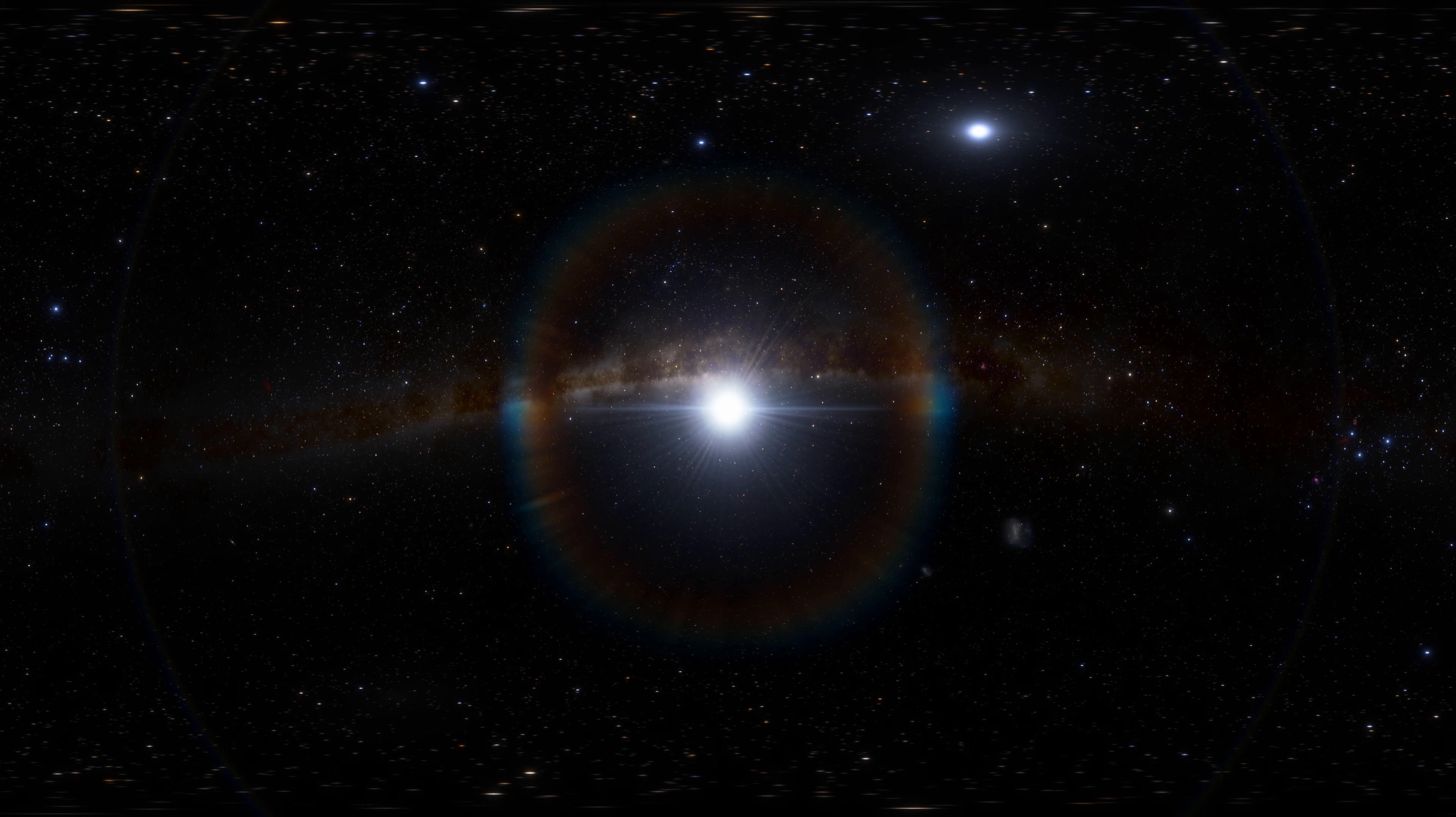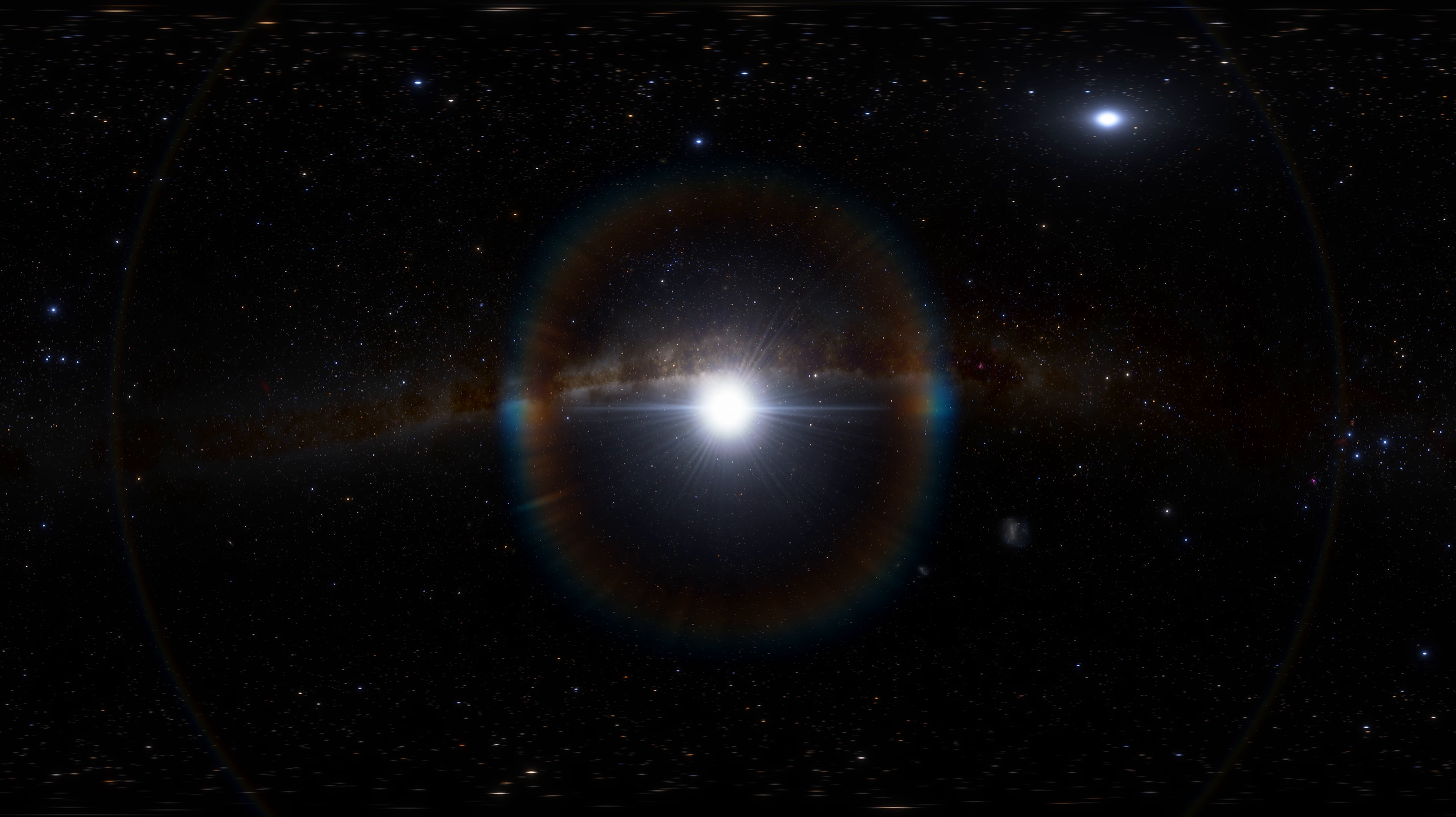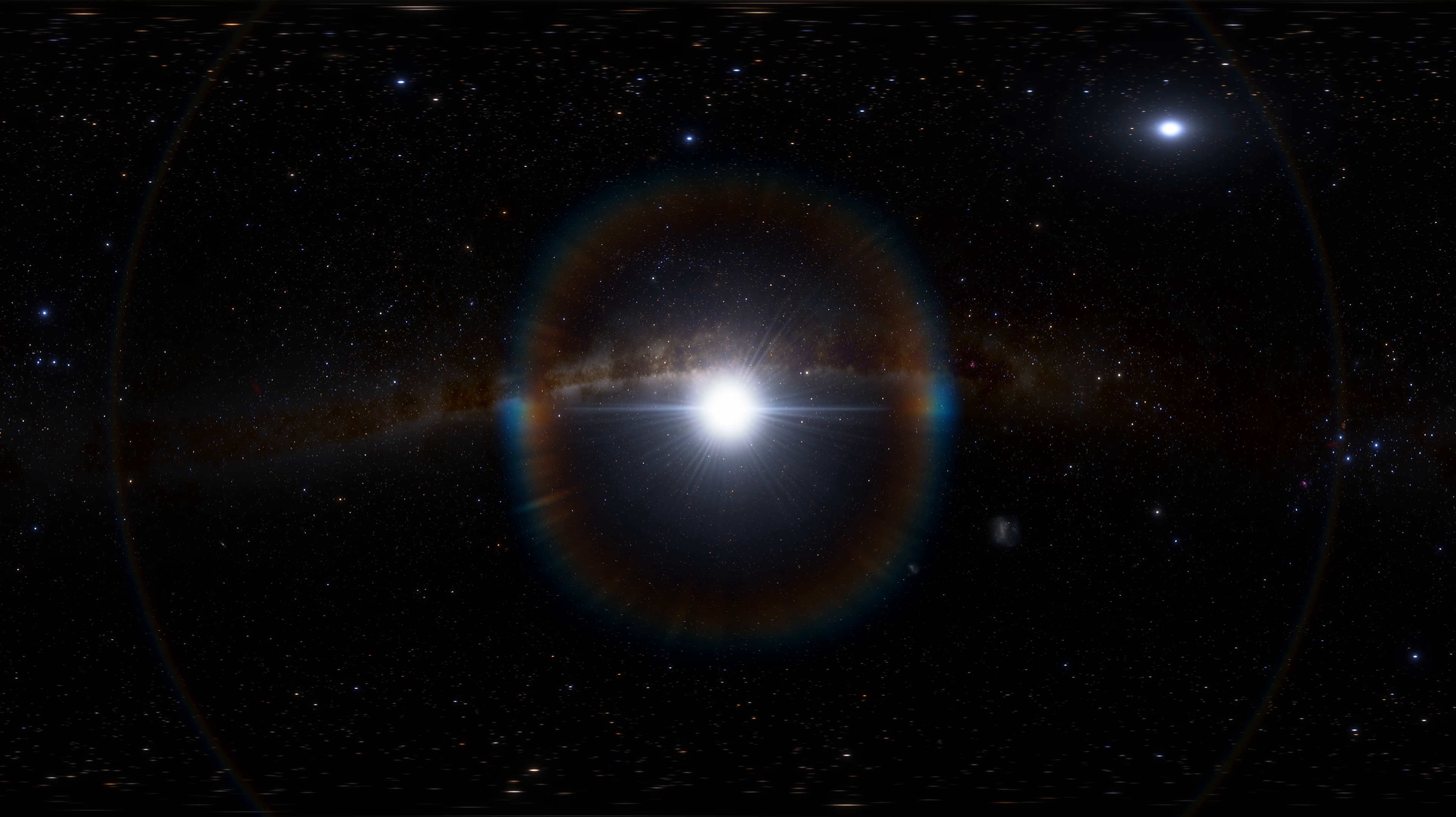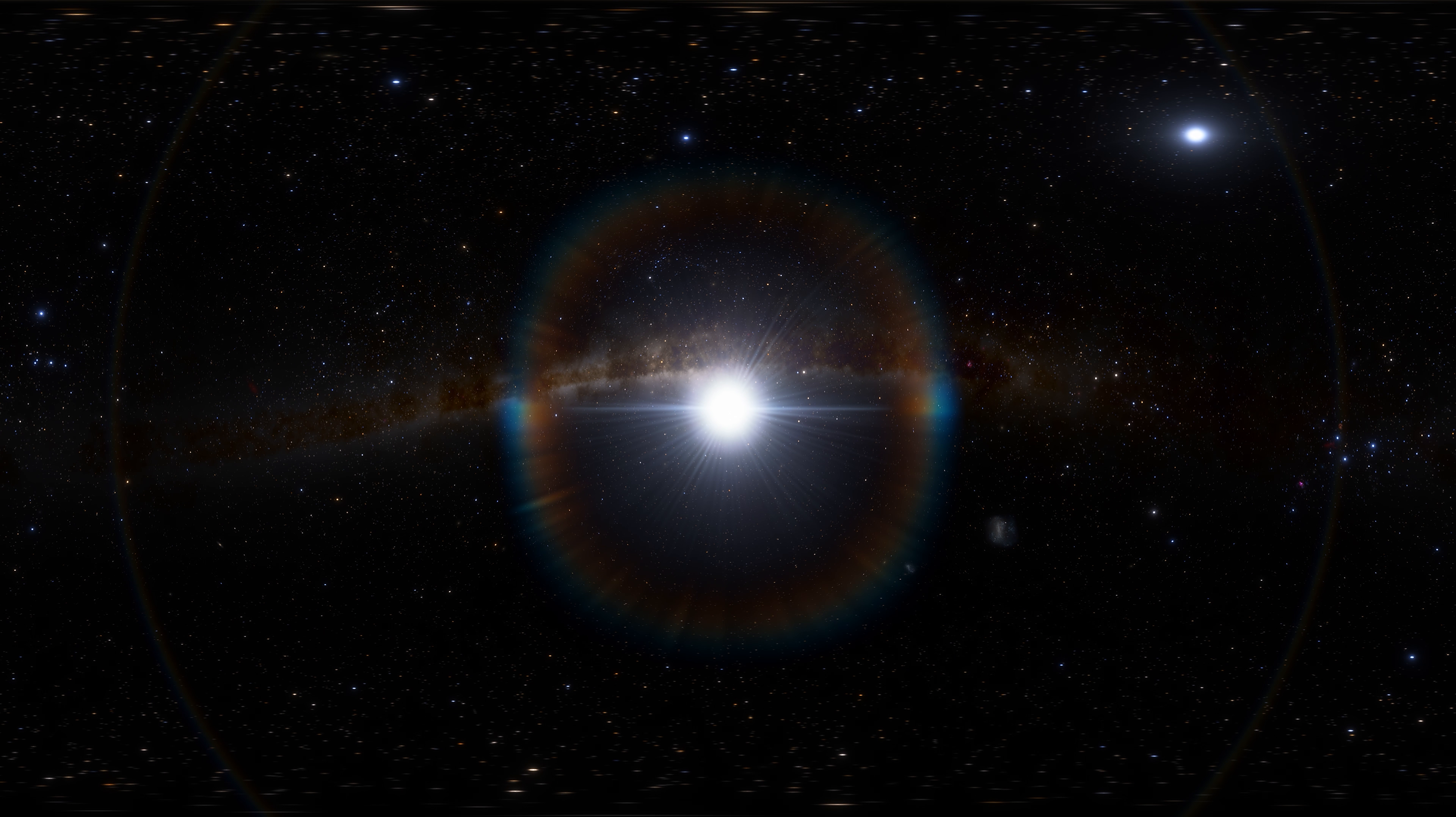Antares is a red supergiant. It is the brightest star in the Scorpius constellation. This star is placed 550 light-years away from the Sun and it is 10,000 times as bright. The mass of Antares is 10 times the mass of the Sun.